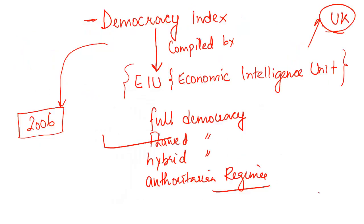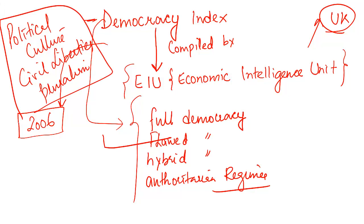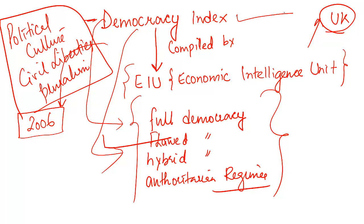That is what S.Y. Qureshi talked about. The Democracy Index arrives at its categorization by looking at political culture, civil liberties, pluralism, and 60 other indicators. This is an important index and can be a relevant question for your prelims examination, as UPSC increasingly asks about indexes and reports released by foreign institutions.